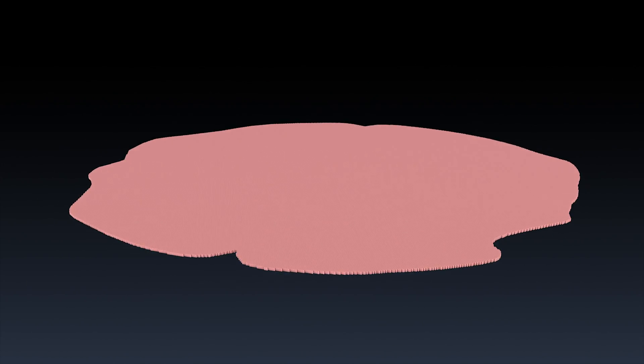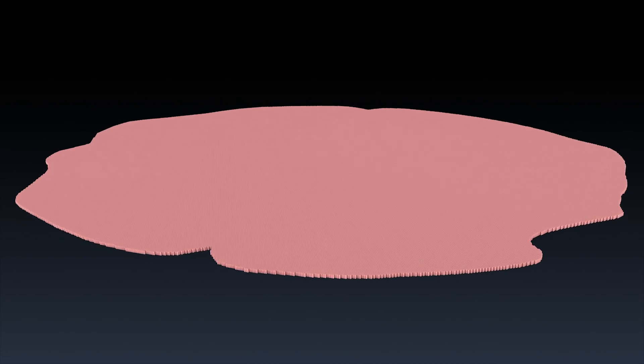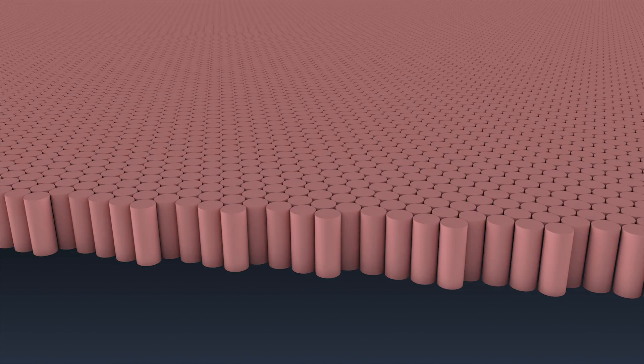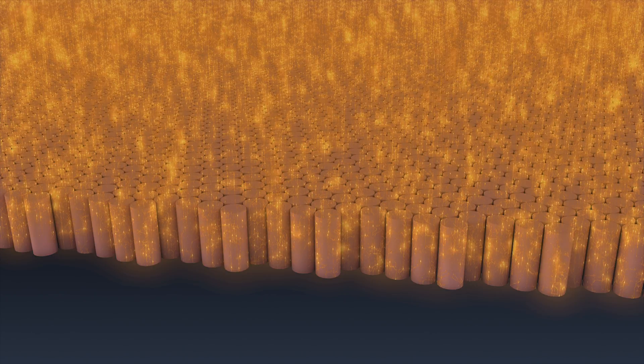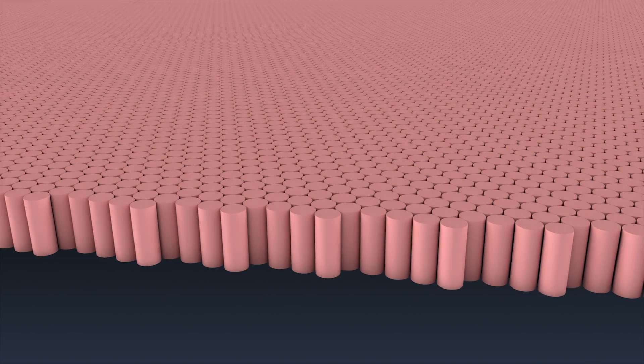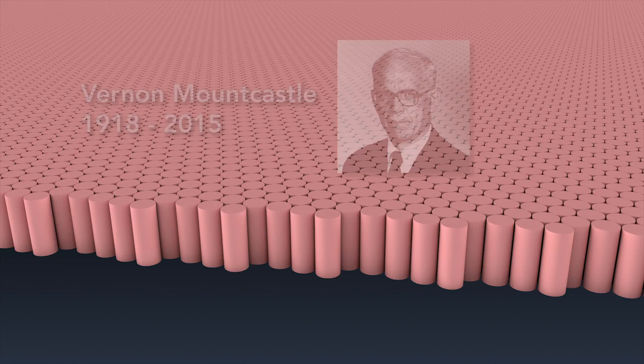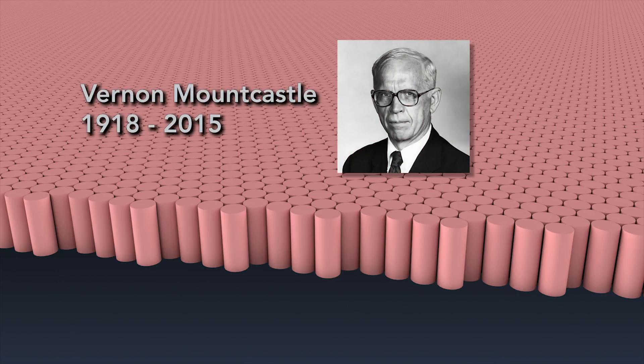Scientists have spent more than a hundred years trying to decipher its complex circuitry. What's most remarkable about the neocortex is the consistency of the microarchitecture. Everywhere you look, you find the same common elements. Neuroscientist Vernon Mountcastle was the first to propose that because every part of the neocortex has the same complex circuitry, then every part of the neocortex is doing the same thing.